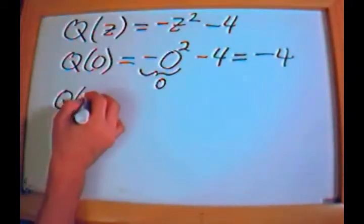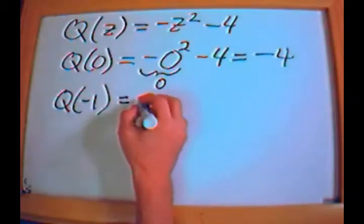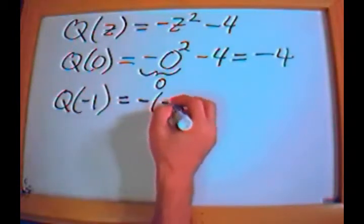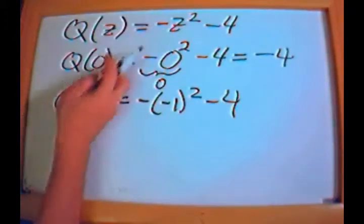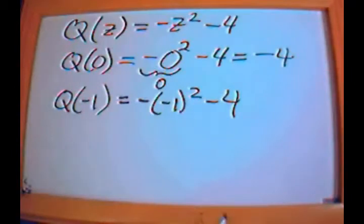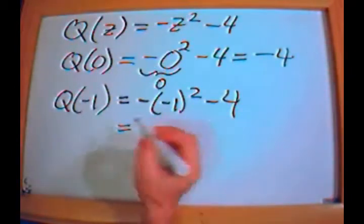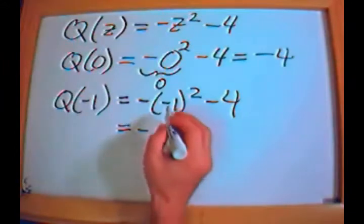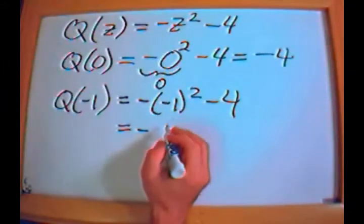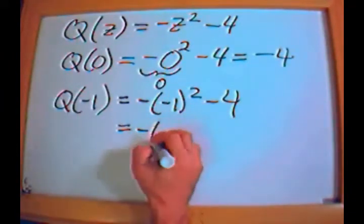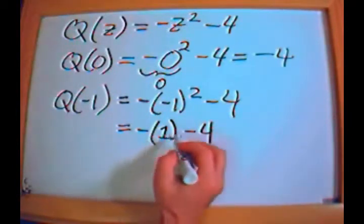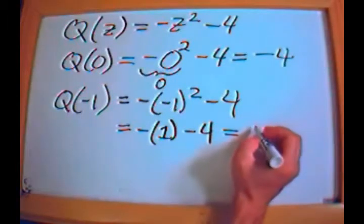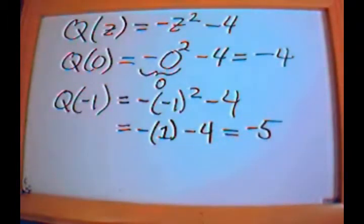What if I had q of negative 1? That equals negative, then negative 1 squared, minus 4. Negative 1 squared is positive 1 because negative 1 times negative 1 is positive 1. So I have negative 1 minus 4, which from our other lesson is negative 5. So q of negative 1 equals negative 5.